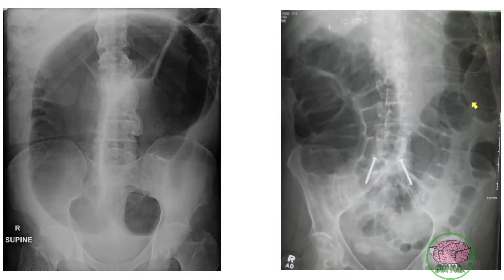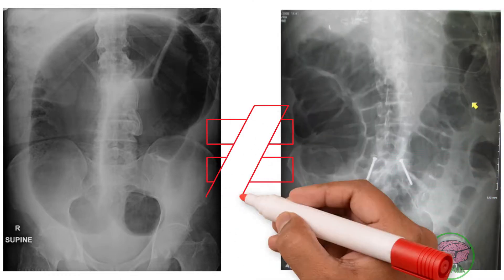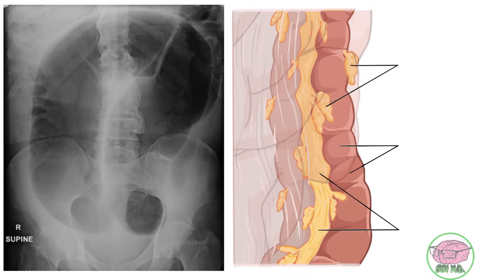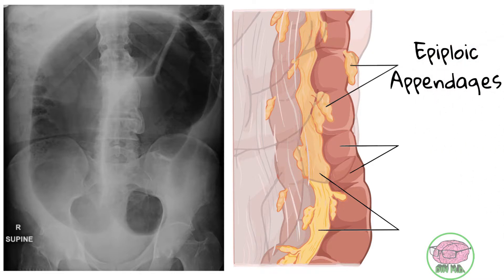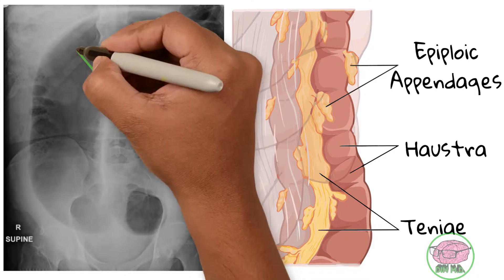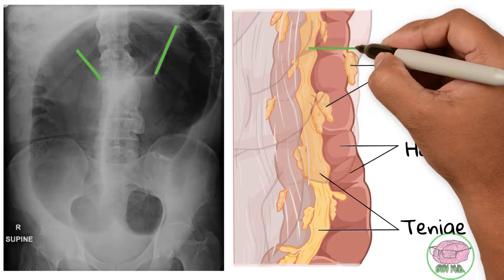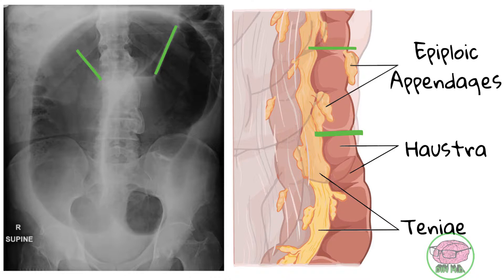Comparing our patient's image with a distended colon, we can identify normal colon anatomy: epiploic appendages made up of fat, haustra which are sacculations or pouch-like structures, and teniae which are flat ribbon-like structures running the entire length of the colon. The white images in the patient's x-ray are really similar to the haustra.